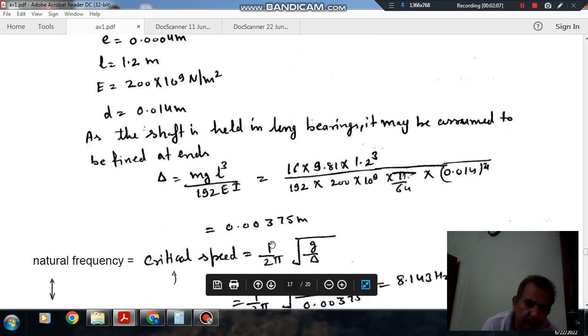Now we know that the natural frequency is 1/(2π) times the square root of g/deflection. And at resonance, the natural frequency is equal to critical speed.